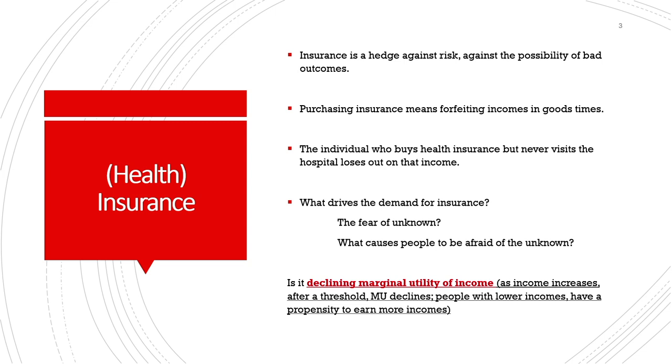Is it declining marginal utility of income? Usually as income increases, marginal utility derived out of income increases, but beyond a threshold, marginal utility of income starts declining. This threshold is different for different individuals. For richer individuals, the declining marginal utility threshold sets in earlier. Poorer individuals have a larger propensity to earn more income as deriving more income gives them more utility. Therefore, we must understand the individual's standard of living and the threshold at which marginal utility starts declining.